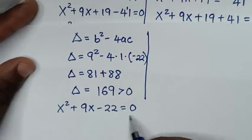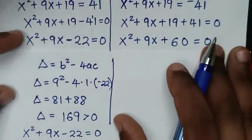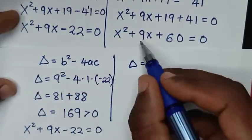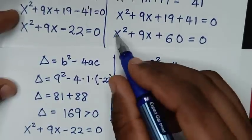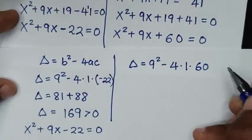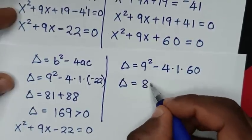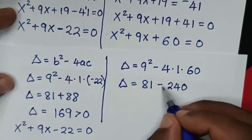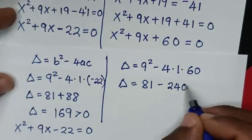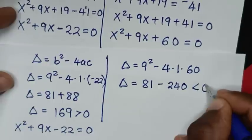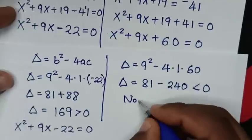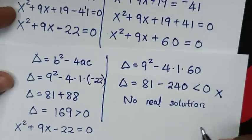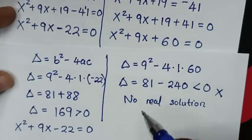Now checking the second equation x² + 9x + 60 = 0, where a = 1, b = 9, c = 60: Δ = 9² − 4(1)(60) = 81 − 240 = −159. Since this value is less than 0, there are no real solutions. We reject this equation because complex solutions are not suitable for a factorial problem.